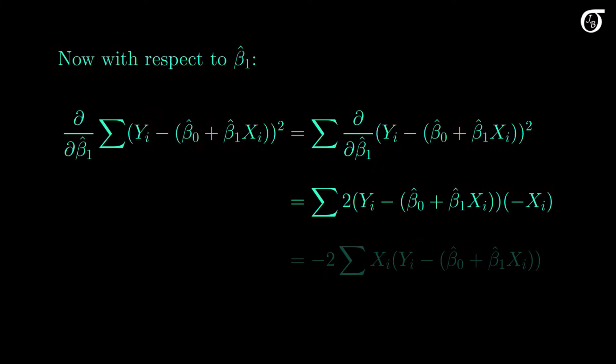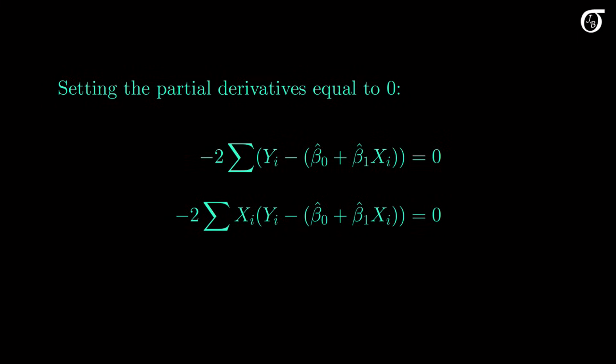Cleaning this up a bit, we can again put the minus 2 out front, and we're left with this summation. And now we set the partial derivatives equal to 0. Here we have two equations in two unknowns, and we're going to solve these to find our estimators, beta0 hat and beta1 hat.